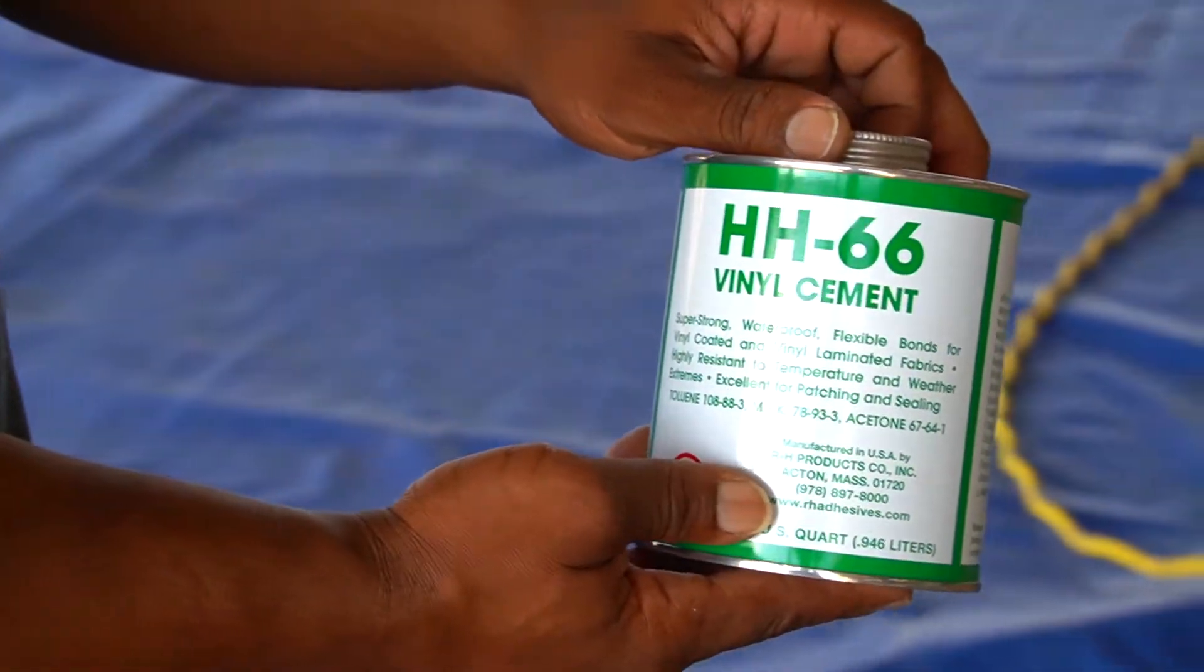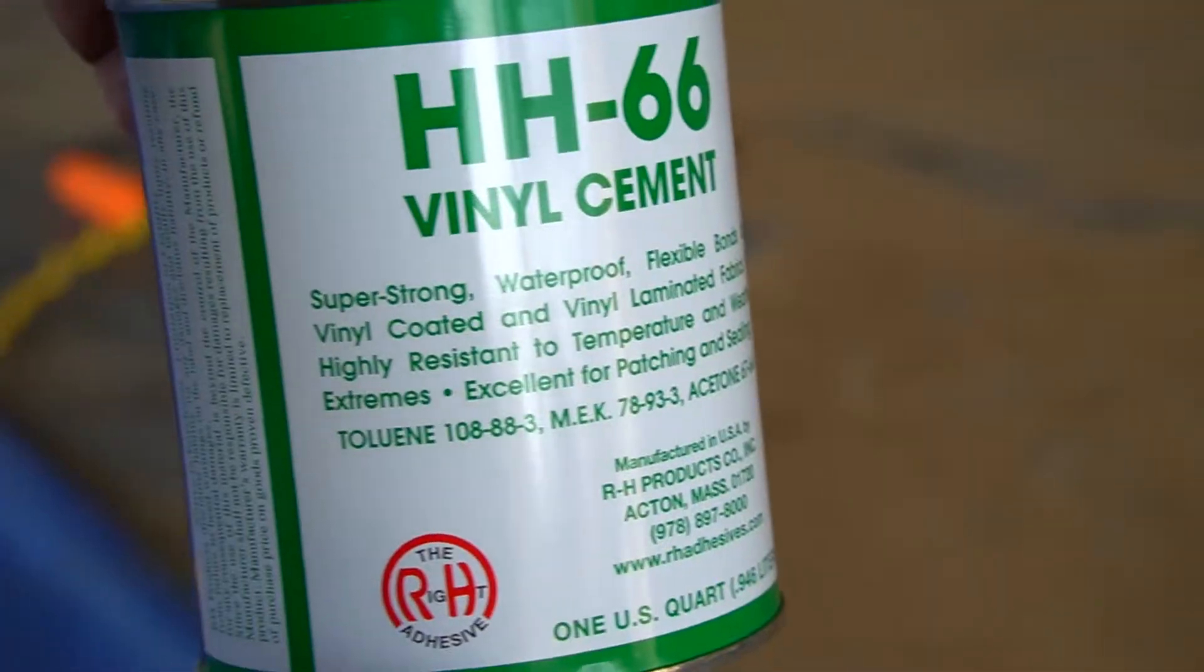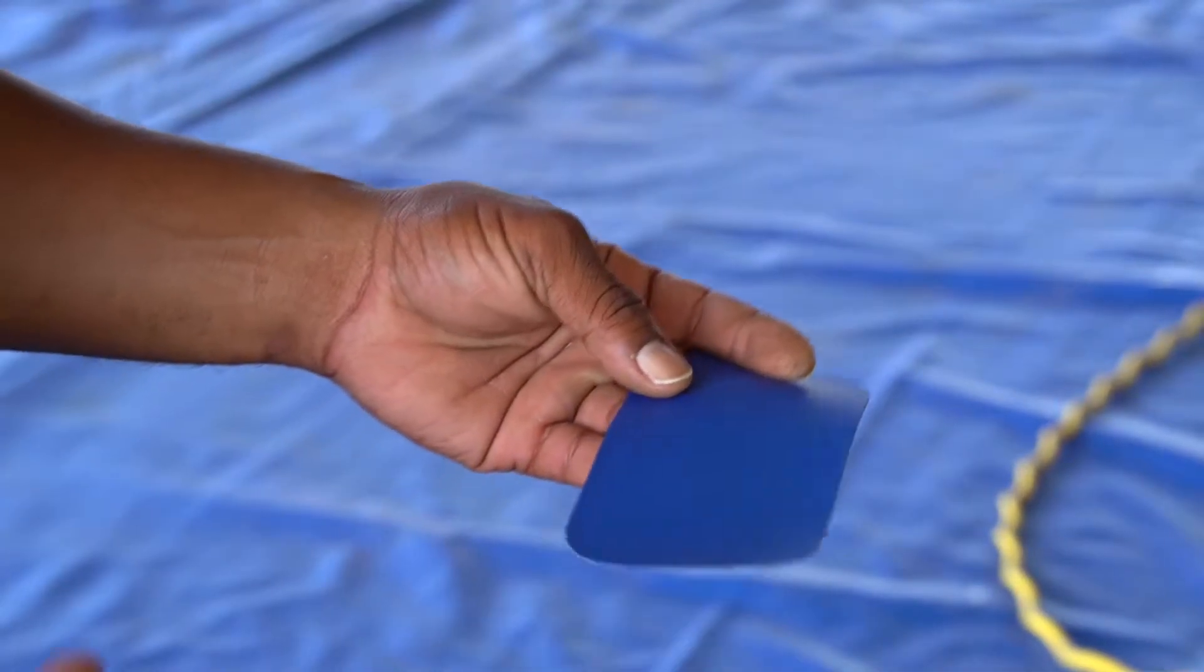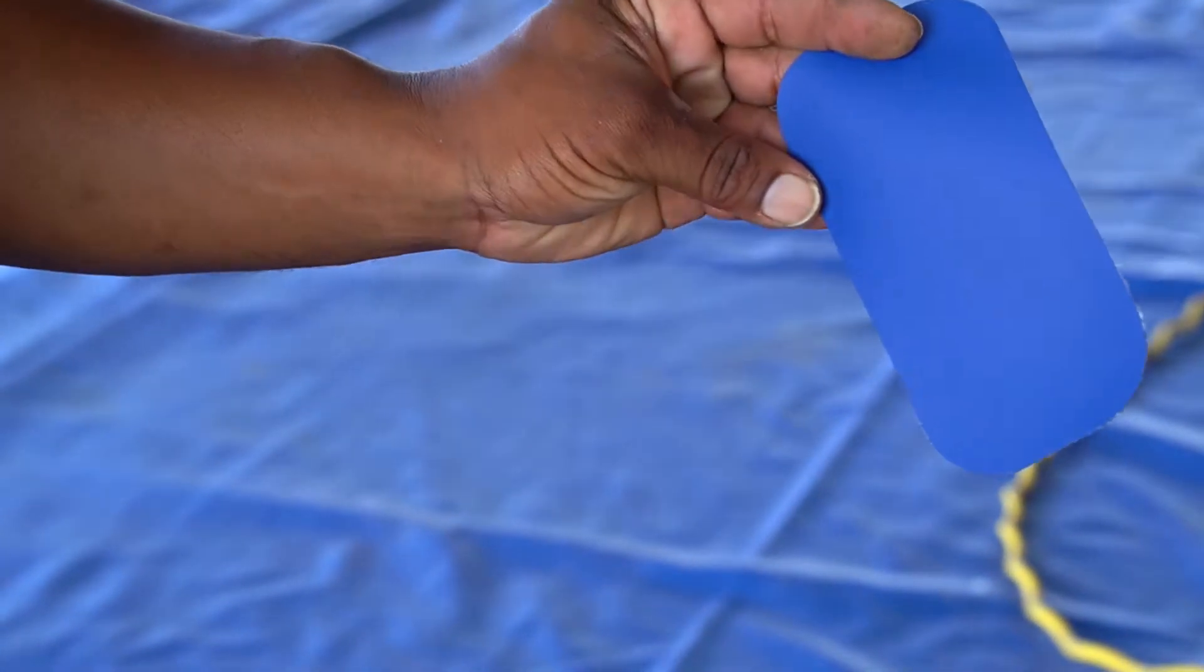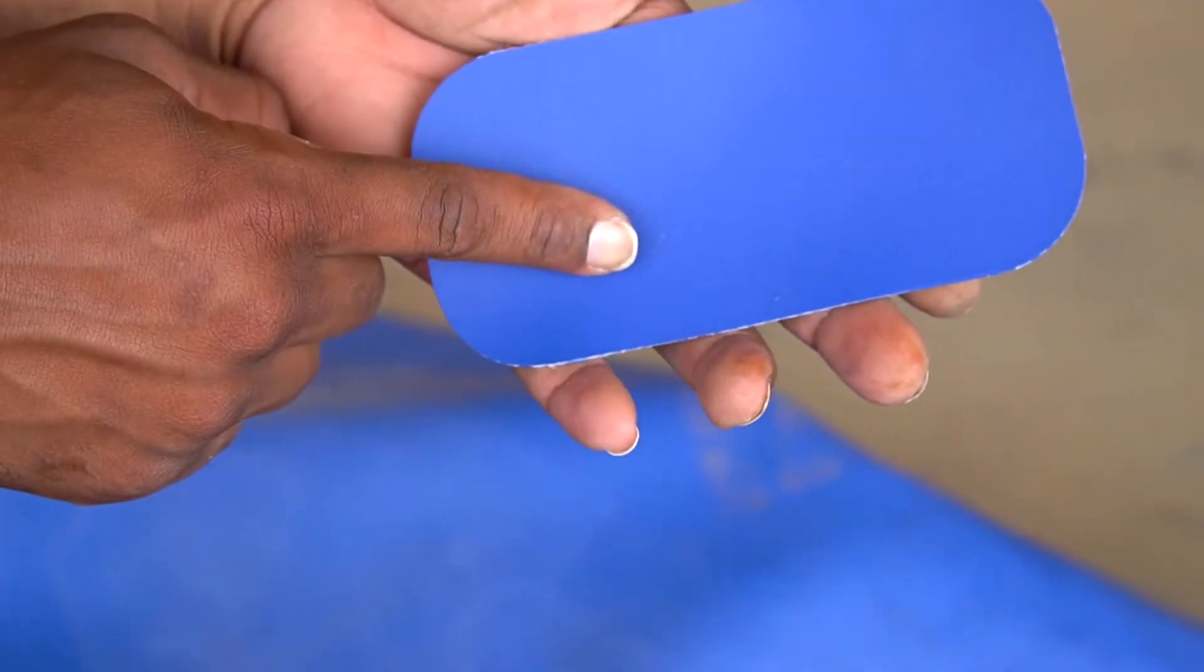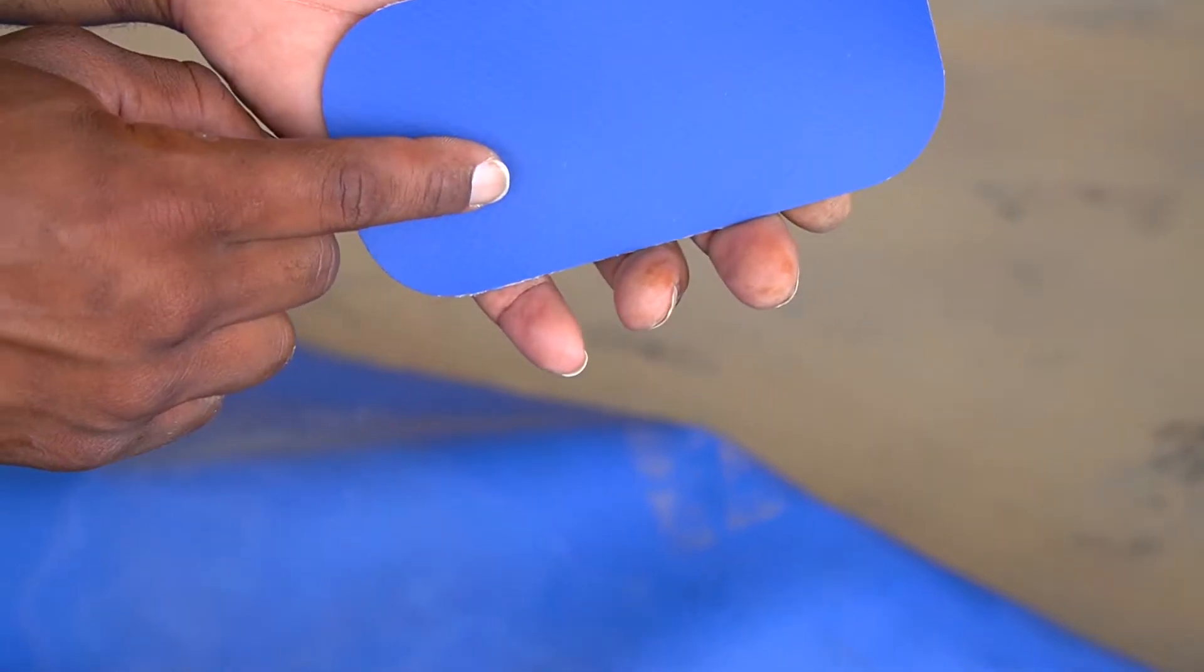Start by grabbing some HH66 vinyl cement, which is waterproof and works perfectly with our Aquabarrier. Next, select an appropriately sized patch for the damage you'll be repairing. The vinyl patch has a coarse side and a smooth side. Be sure to lay the smooth side of the patch down onto the barrier for adhesion.